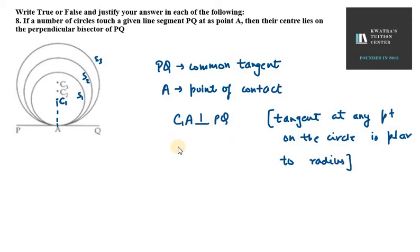Now, what will be next? If we join C2 and A, then C2A is perpendicular to PQ. Similarly, for the third one, C3A is perpendicular to PQ. Same reason for all.